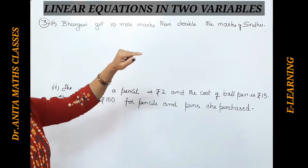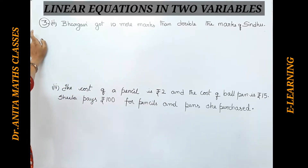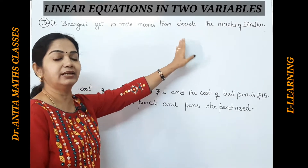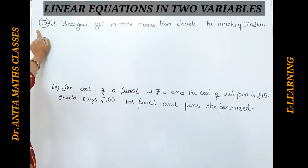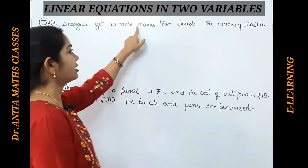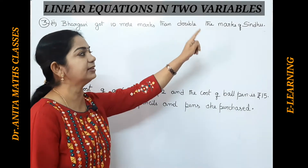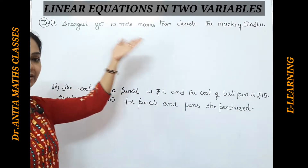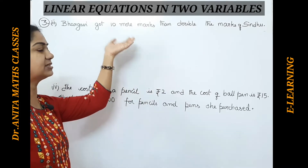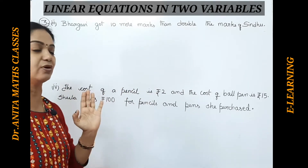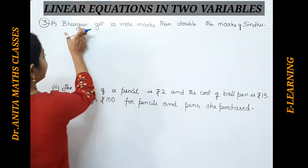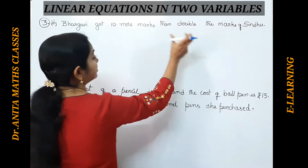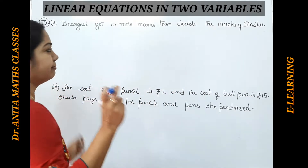The first and second bits I have dealt with in the previous video session. Now the third bit: the question is to express the following into linear equations in two variables. Here, Bhargavi got 10 marks more than double the marks of Sindhu. This is the given condition, and we have to express it in the form of a linear equation in two variables.